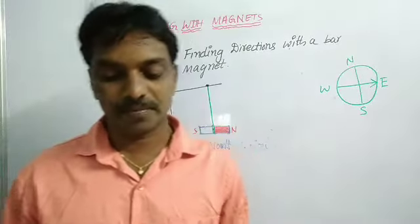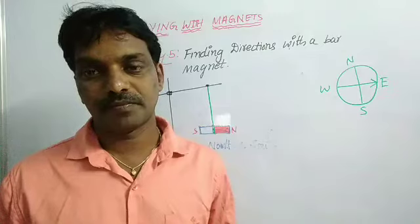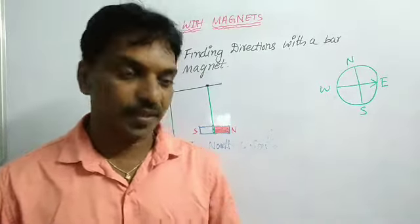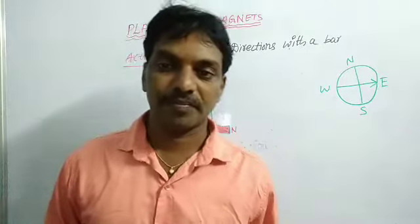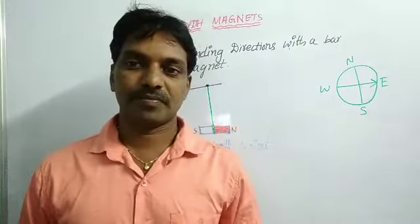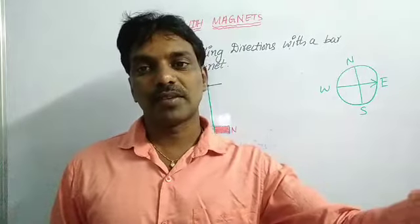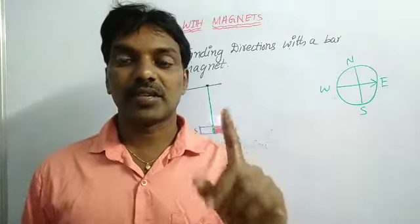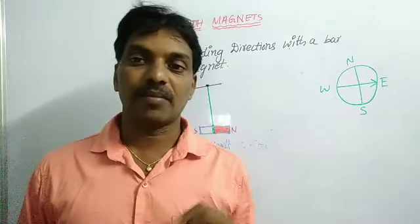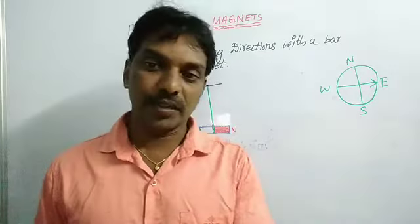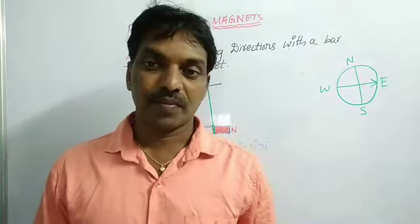Repeat this experiment at another place — what do you observe? The same activity. Here I am doing it, but we have to move to some other place and do the same activity. If you do it there also, the same thing happens. Wherever you go, north-south directions only you can find in that area by using the bar magnet. So here or there, wherever it is, once you find north-south directions, the remaining two directions we can find automatically.